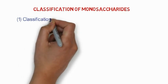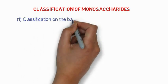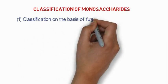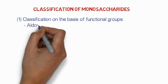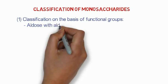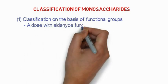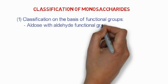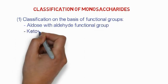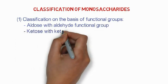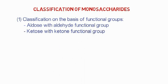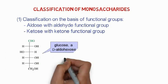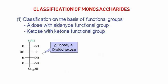Now we will talk about the classification of monosaccharides. The first classification is based on the functional group — specific types of groups present in each molecule. The first class is aldose, with an aldehyde functional group. The second class is ketose, with a ketone functional group. So we have two functional groups in monosaccharides.